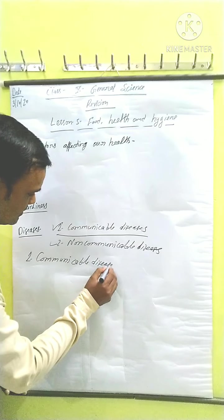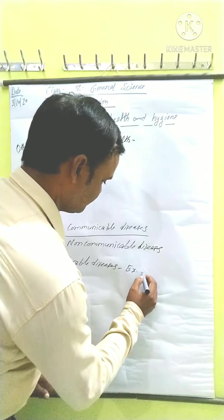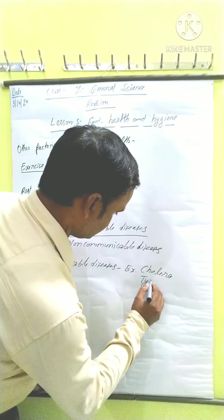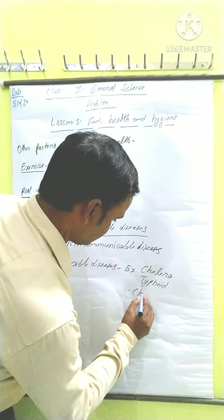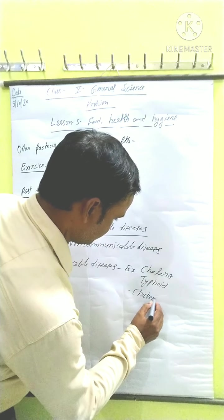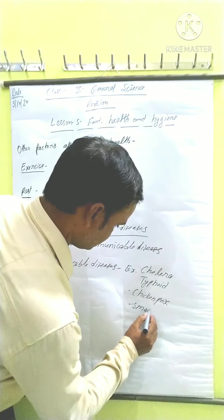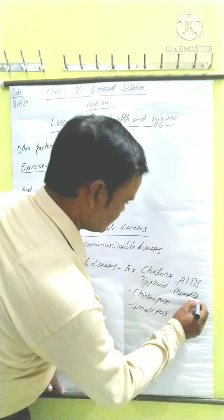Examples of communicable diseases include: typhoid, fever, chickenpox, and smallpox.